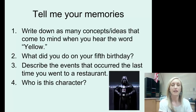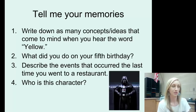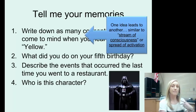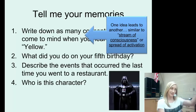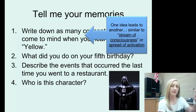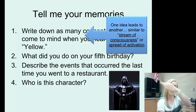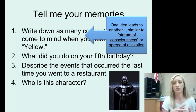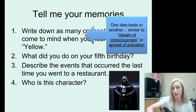Think about your memories — write down as many concepts or ideas that come to mind when I say the word 'yellow.' One idea might lead to another, like the sun, then yellow flowers because the sun and flowers relate to each other, and maybe a yellow umbrella. That's the stream of consciousness, or spread of activation — one thing you think of makes you think of another, because neurons activated in your memories are linked to similar things and trigger those neurons.